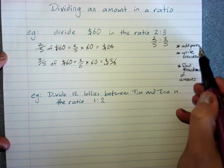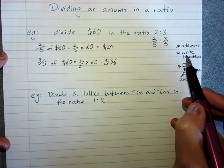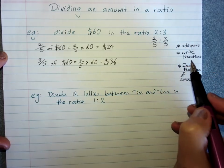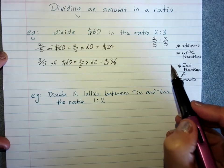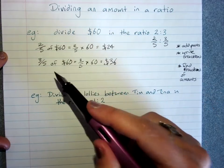You work out what the total is by adding the parts, write the ratio as a fraction out of that, and then you just find that fraction of the amount.